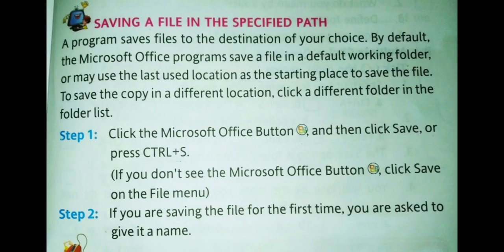Saving a file in the specified path. A program saves files to the destination of your choice. By default, the Microsoft Office programs save a file in a default working folder, or may use the last used location as the starting place to save the file. To save a copy in a different location, click a different folder in the folder list.